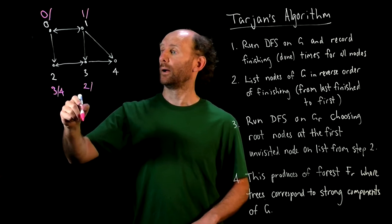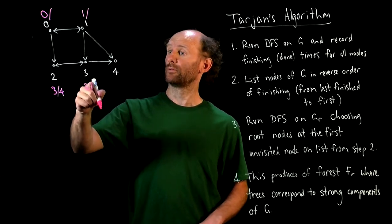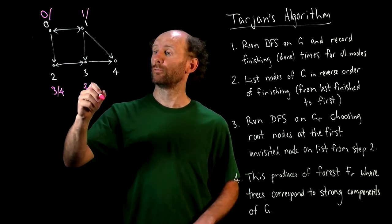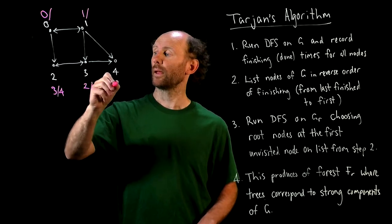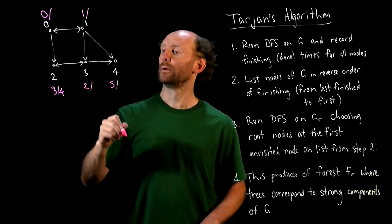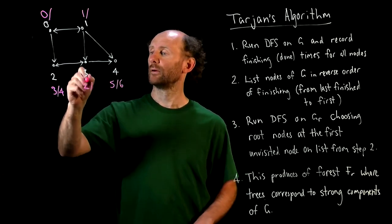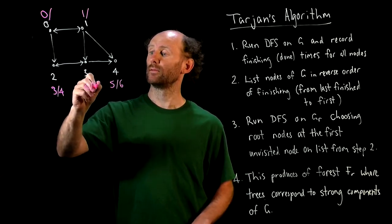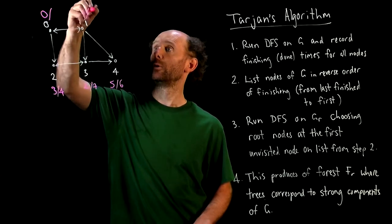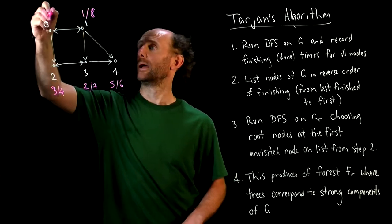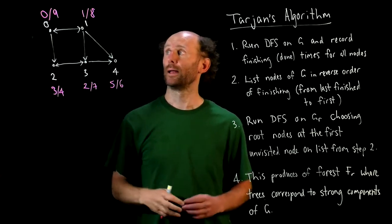we're now done at node 2, we return to node 3 and visit node 4 at time 5, we're done at node 4 at time 6, we're done at node 3 at 7, we're done at node 1 at 8, and we're done at node 0 at 9.